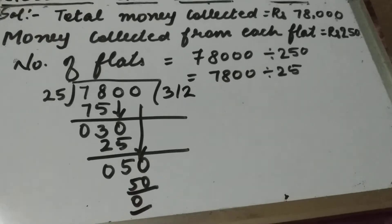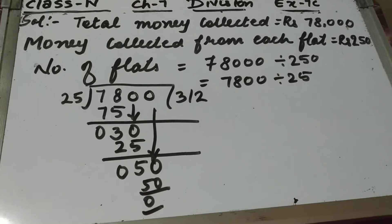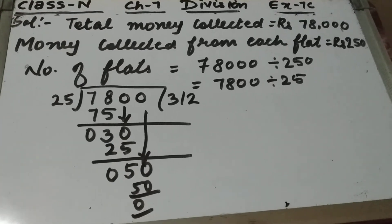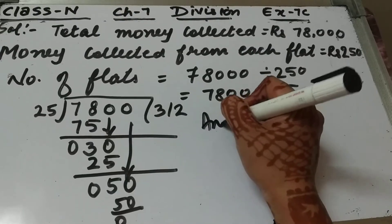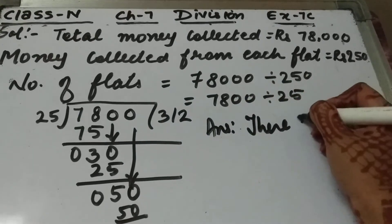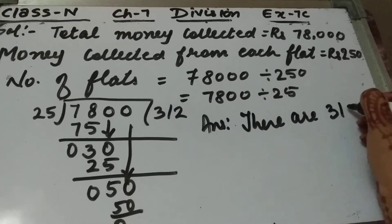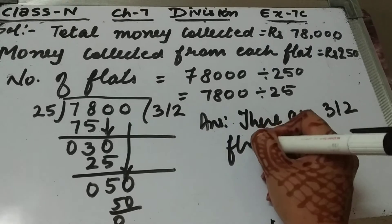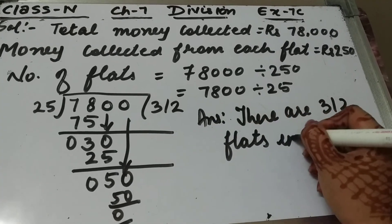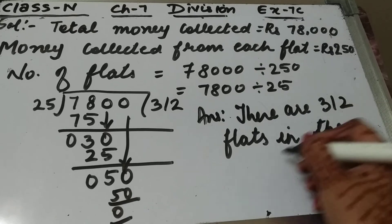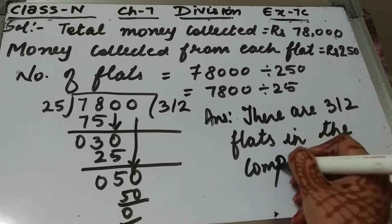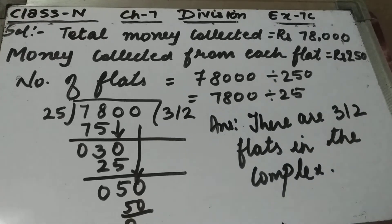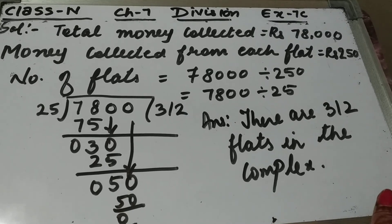So how many flats are there? There are 312 flats in the complex. You will write there are 312 flats in the complex. So this is question number 7th of exercise 7th C.